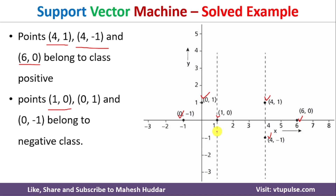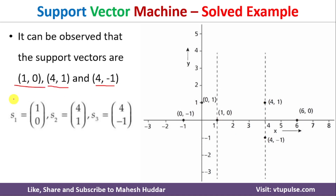Once the data has been marked, we need to identify the support vectors from both classes. If we look at this dataset carefully, we can say that (1,0) is a support vector from the negative class, and (4,1) and (4,-1) are the support vectors from the positive class. Once we identify these support vectors, we need to find the equation for the hyperplane.